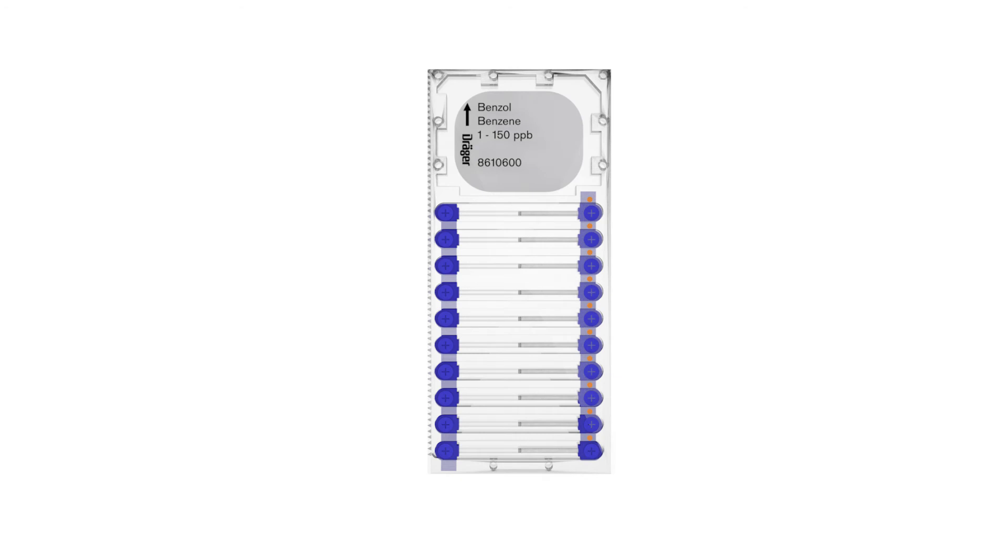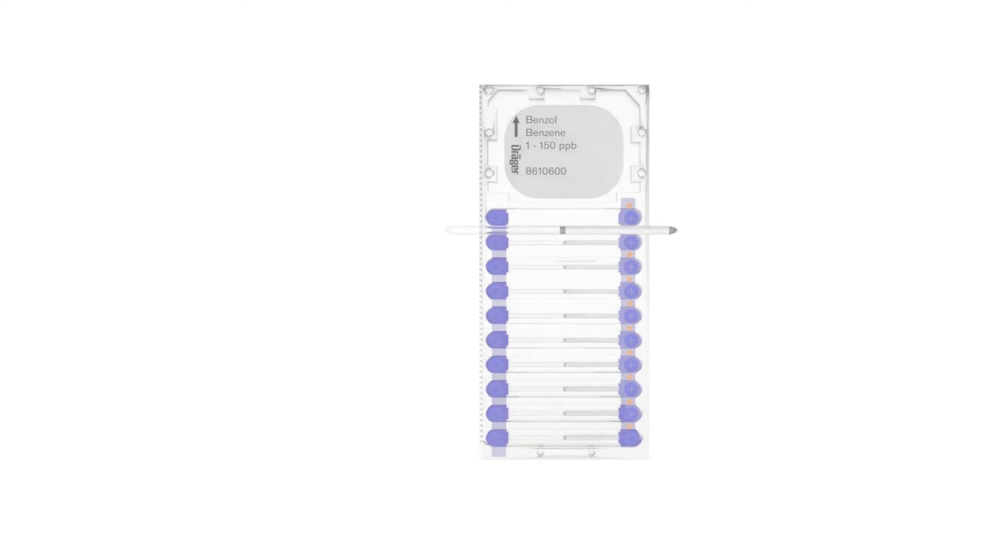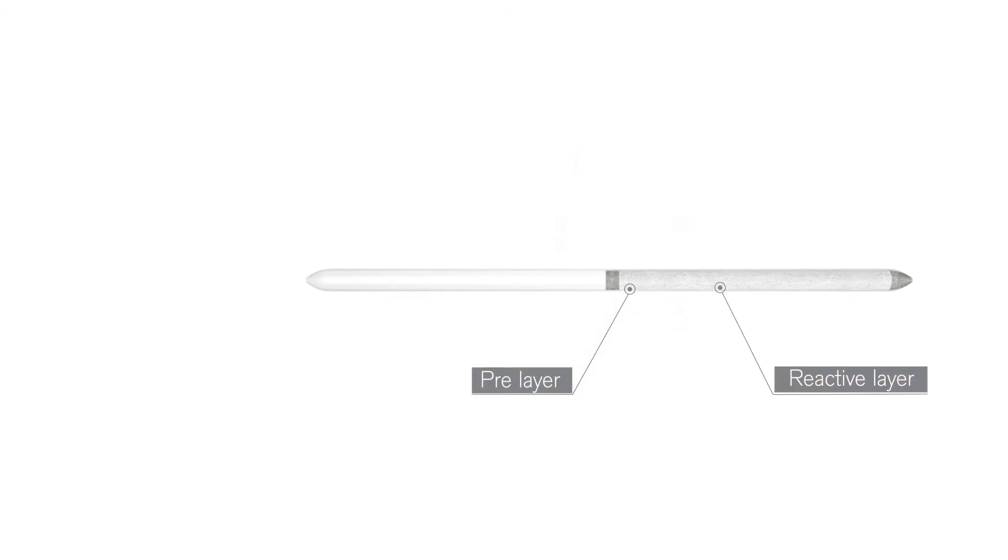The sensitive microtubes are based on colorimetric chemical sensors. They consist of multiple outer layers and reactive layers that allow for selective testing. The outer layers serve as a filter, filtering out other substances that occur in the worksite, while the hazardous substance being measured triggers a chemical reaction with the reactant system.